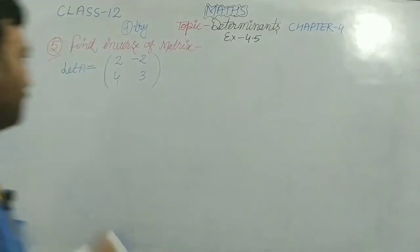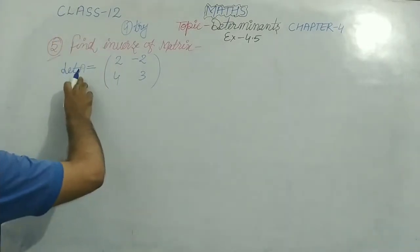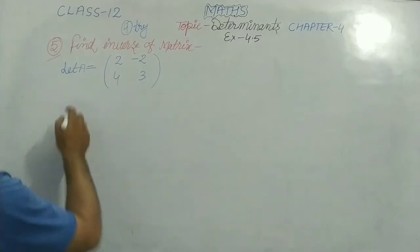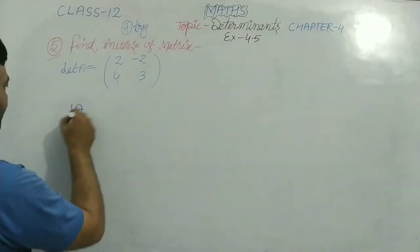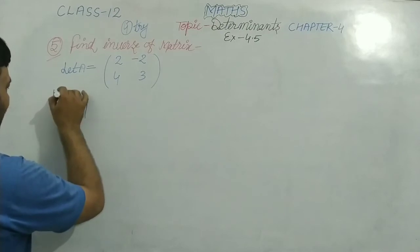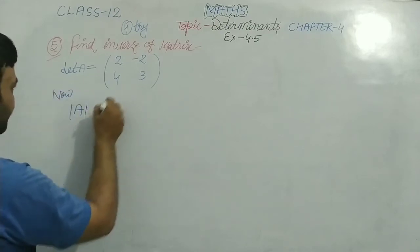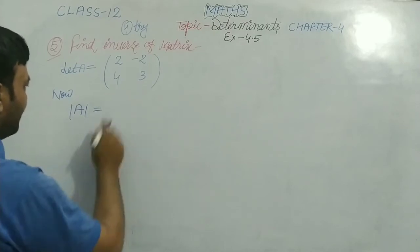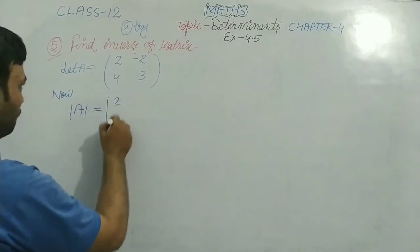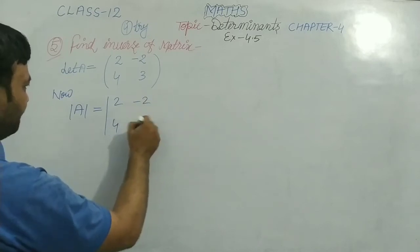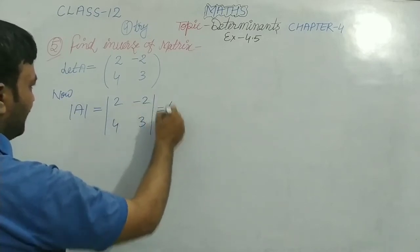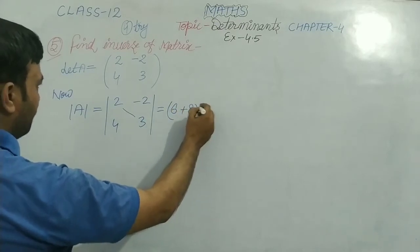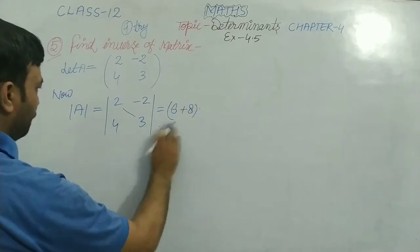Firstly, we will take let A equal to this matrix. Now we will find the determinant of A. We know very well we can write in determinant condition: 2 times 3 minus 4 times negative 2, so we will get 6 plus 8, which gives us 14.